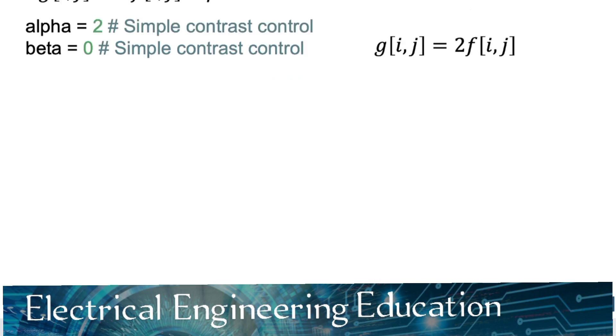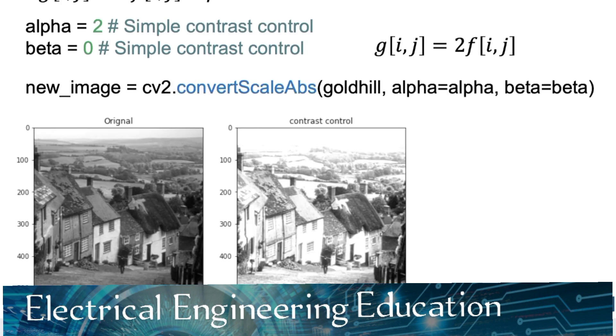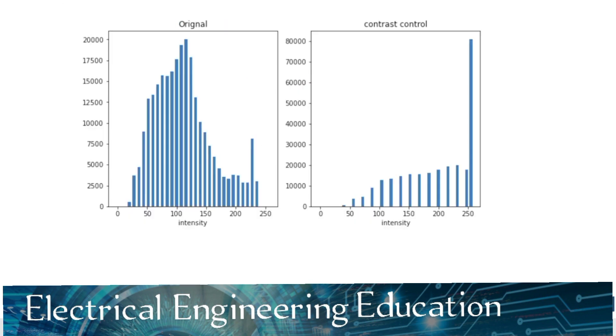We can adjust alpha to change the contrast. We see the contrast in the darker areas have improved, but the lighter areas of the image appears washed out. Comparing the original image histogram to the histogram of the new image, we see the lower values exhibit more spread. But many of the larger values have been mapped to 255, explaining why the image appeared washed out. We can use nonlinear functions, but let's explore some algorithms that optimize contrast.